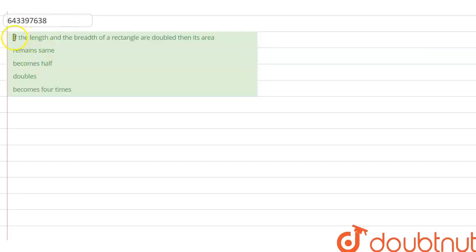Hi guys, we have a question right now. If the length and breadth of a rectangle are doubled, then its area: remains same, becomes half, doubles, or becomes four times.